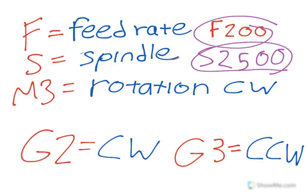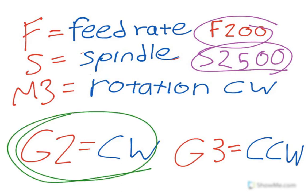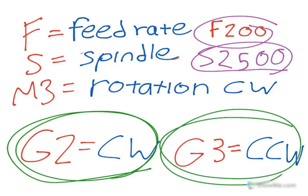Two more important things to note are the G2 code, which is to spin clockwise instead of a linear motion, and a G3, which is to go counter-clockwise.